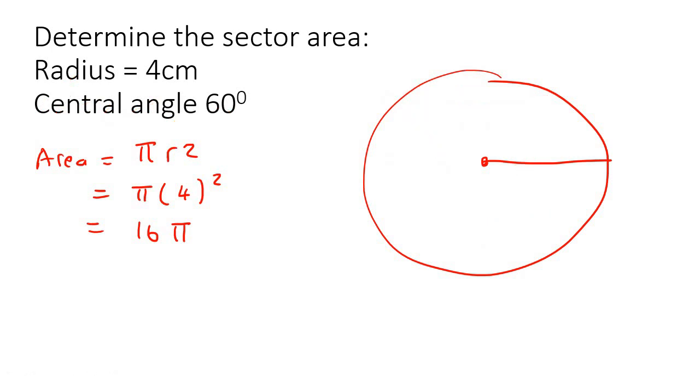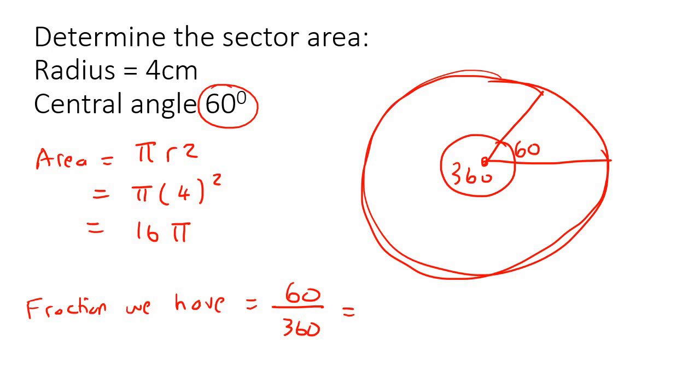But we don't have a whole circle. We only have 60 degrees. Now, we know that a whole circle is 360, all the way around 360. So what we can then realize is that the fraction that we have is going to be 60 divided by 360, which is one over six. So we only have a sixth, one-sixth of the whole circle. So that means we need to multiply this by one-sixth, which is the same as dividing it by six, and that will give us the area of this little piece that we actually have.